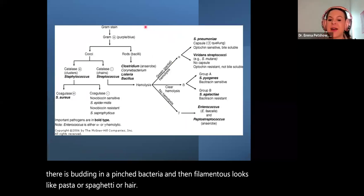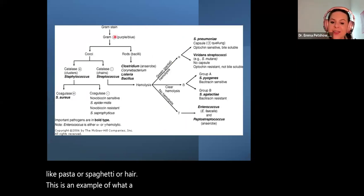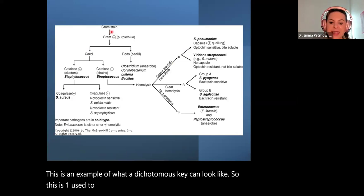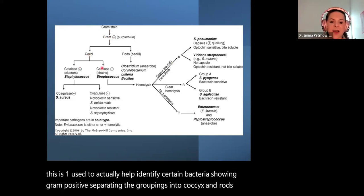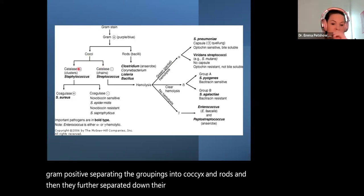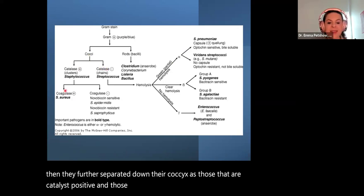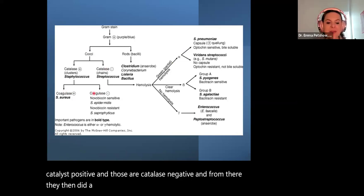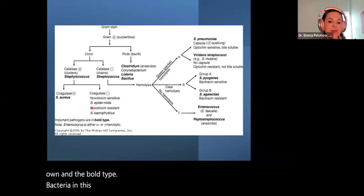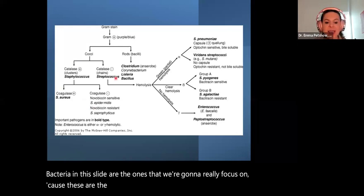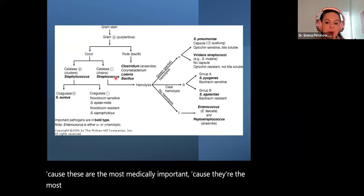This is an example of what a dichotomous key can look like — one used to actually help identify certain bacteria. It shows gram positive bacteria separated into cocci and rods, and then the cocci are further separated into those that are catalase positive and those that are catalase negative. From there, a coagulase separation gets staph aureus on its own. The bold type bacteria in this slide are the ones we're going to focus on, because these are the most medically important and the most pathogenic.